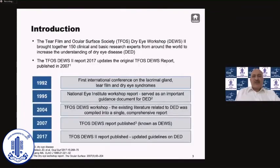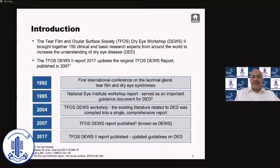The Tear Film and Ocular Surface Society Dry Eye Workshop brought together 150 clinicians and basic scientists from around the world. They compiled and screened all the studies from around the world. The work started in March 2015 in San Francisco, and we met several times over the next two years. The report was finally published in September 2017 in the journal Ocular Surface.